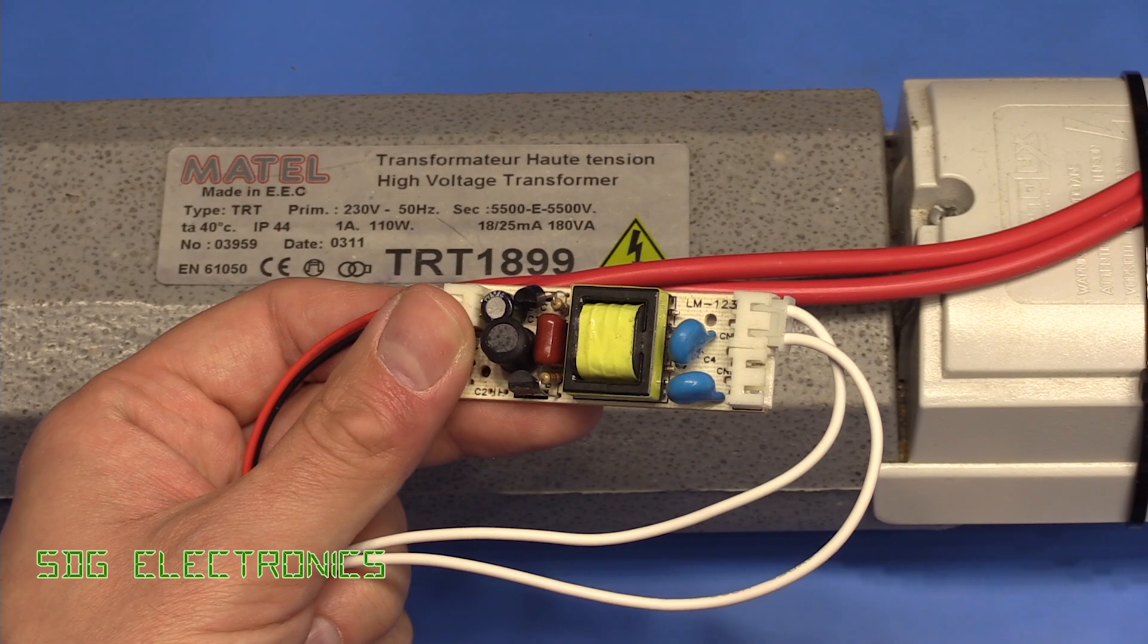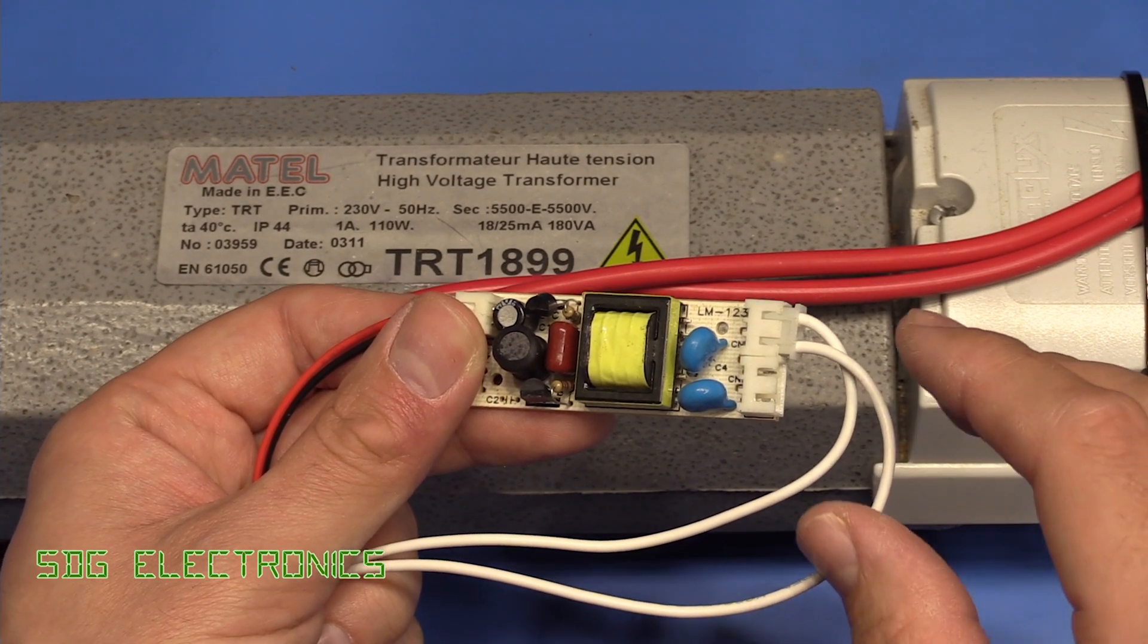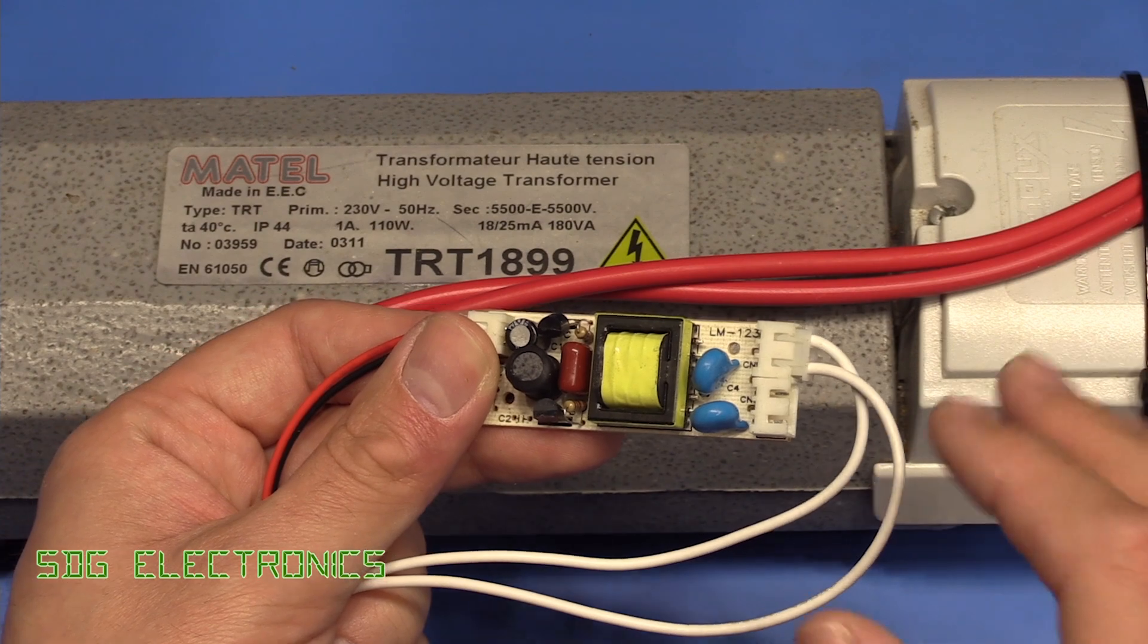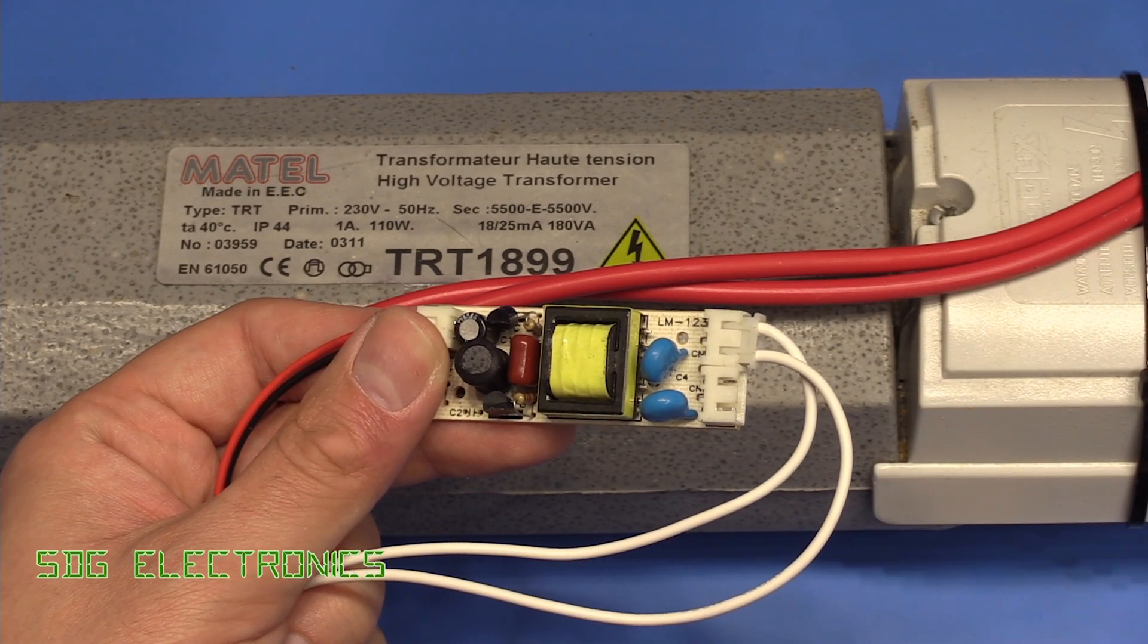Or something like an ignition transformer from a car or even from an oil-fired boiler. But the smaller the power supply, the less ozone is going to be produced.